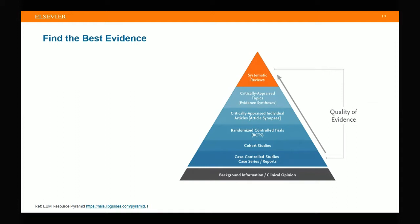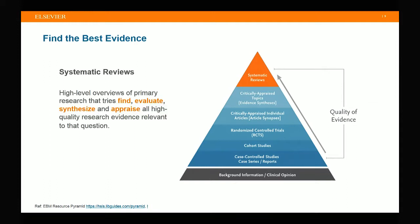Finally, at the top of the pyramid is the systematic review. A systematic review uses advanced, defined, and transparent procedures to find, evaluate, synthesize, and appraise the results of relevant searches. This practice is designed to minimize bias, and systematic review is considered the strongest and highest quality of evidence.